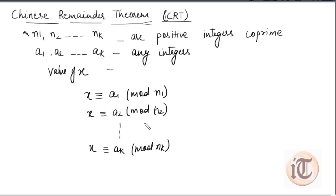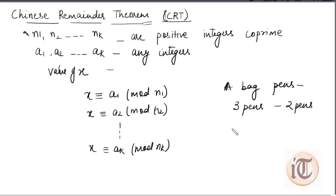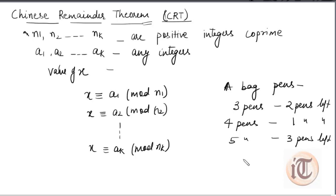Suppose we have a question like: a bag has a certain number of pens. If we take out 3 pens at a time, then 2 pens are left. If we take out 4 pens, then 1 pen is left. And if we take out 5 pens at a time, then 3 pens are left. Now, if we have to calculate the smallest number of pens in the bag, we can apply the Chinese Remainder Theorem.